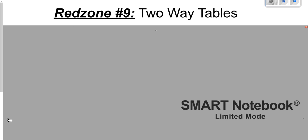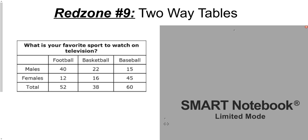A two-way table is a way of displaying statistics, usually survey answers, something like that. It's called a two-way table because it usually involves two separate categories, and you can read it in two different ways. Here's an example. You can see there are two categories: gender, which I'm hovering over now, and at the top, 'what is your favorite sport to watch on television,' with all these numbers in the table.